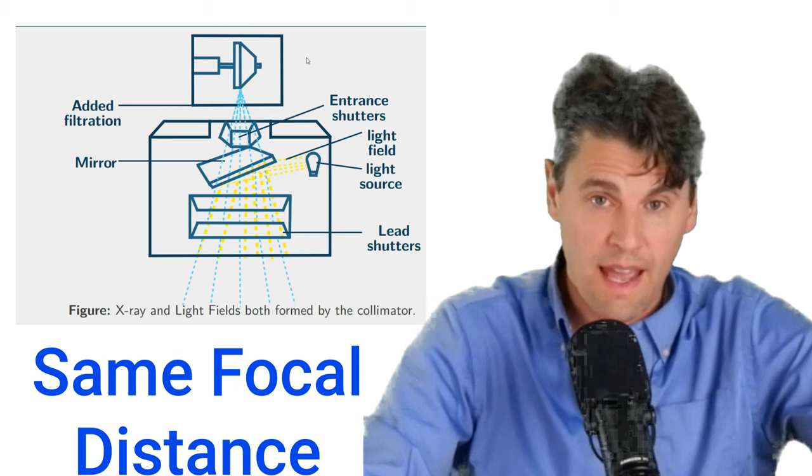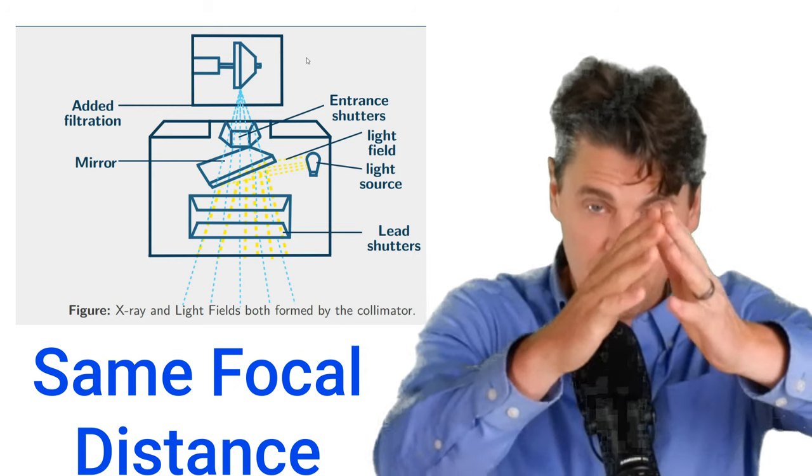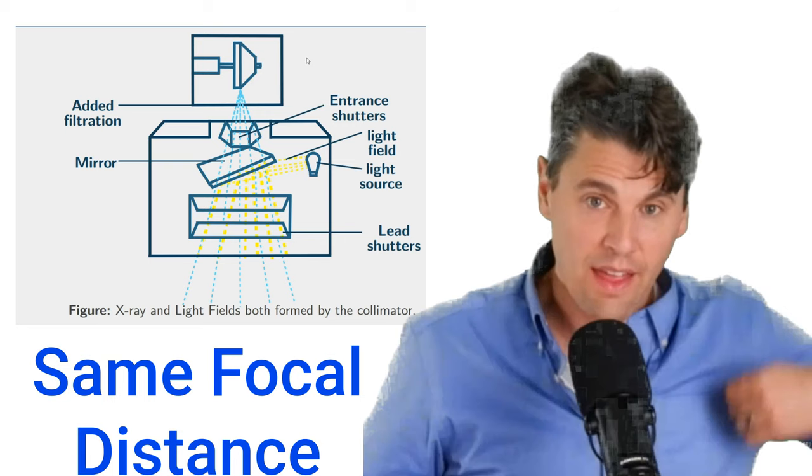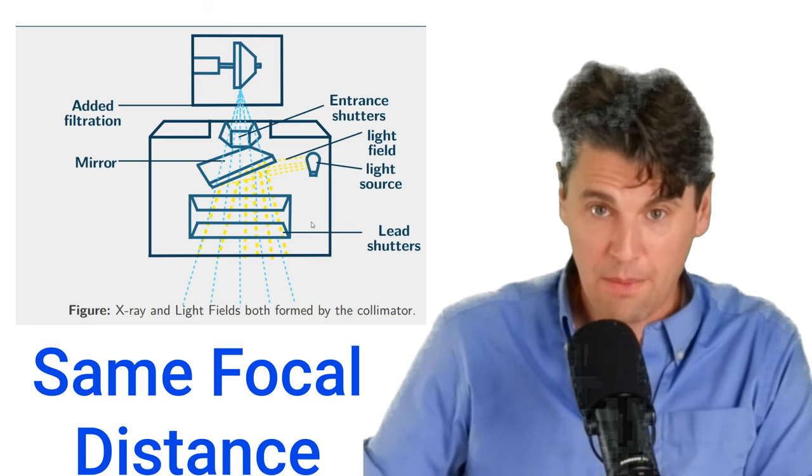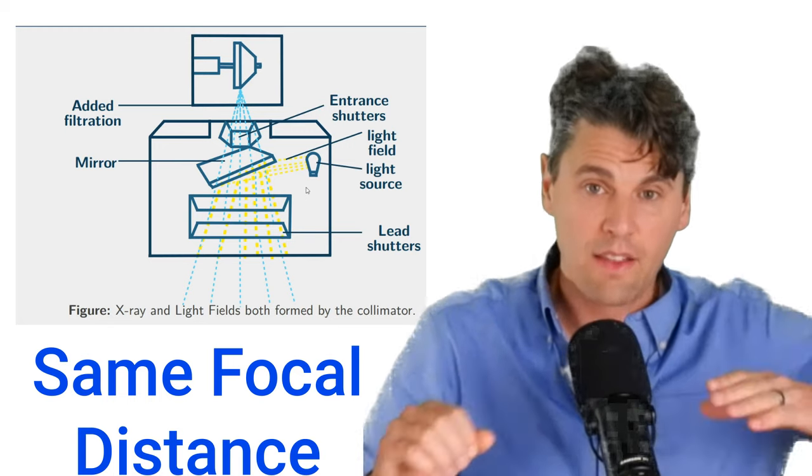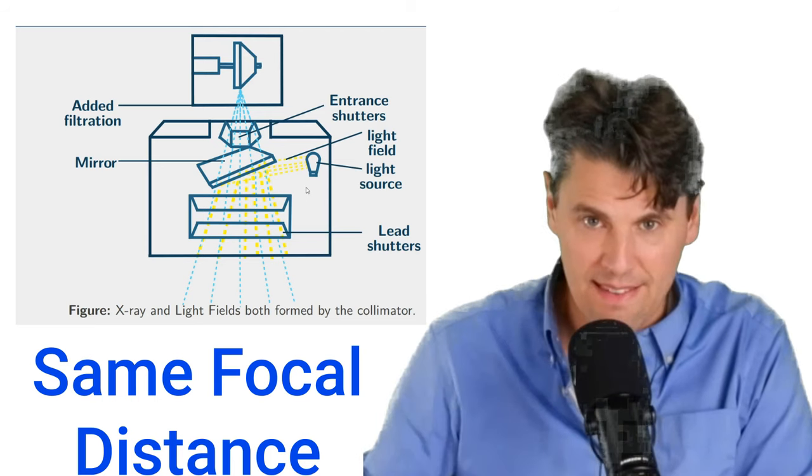That light can essentially travel the same path that the x-rays will be traveling. The light that's at the outside will be blocked by the lead shutters or the collimator, and then the light that's on the inside is going to pass through in the same way as the x-rays.